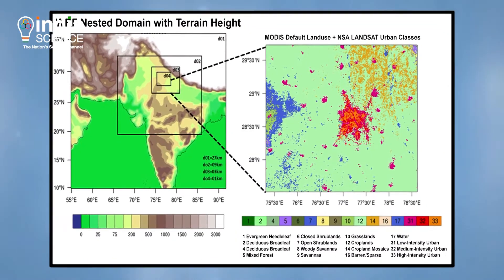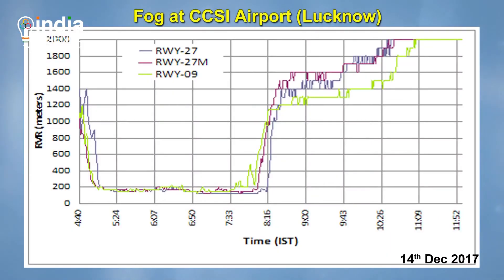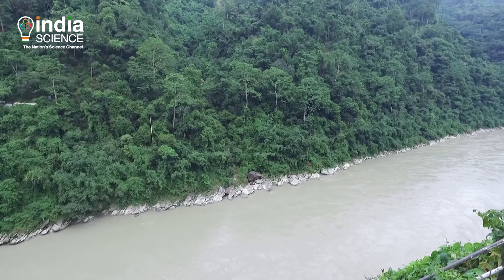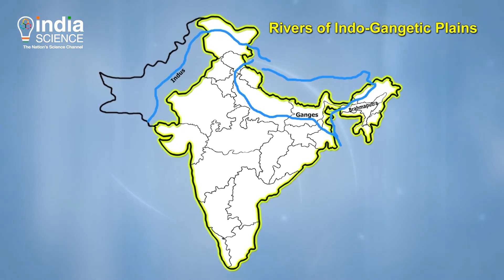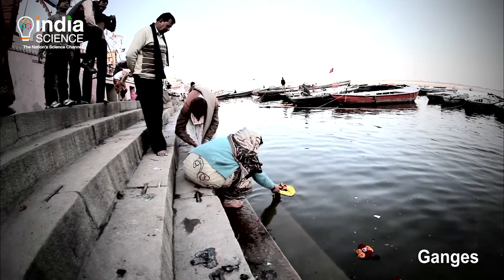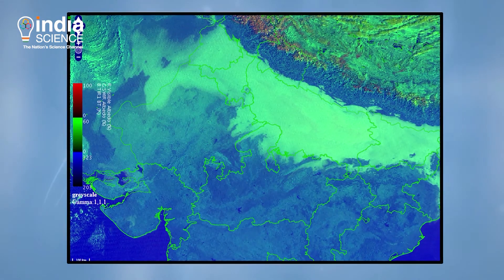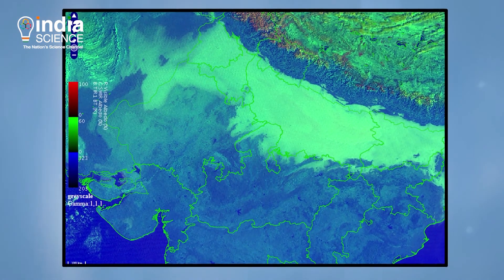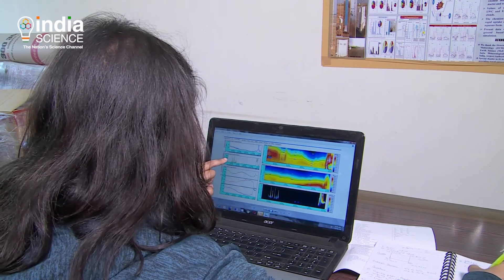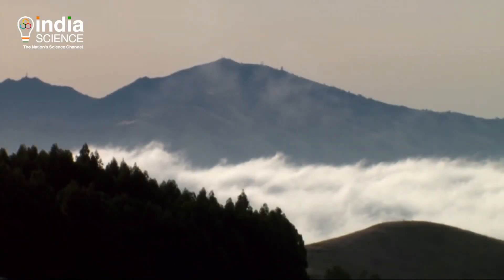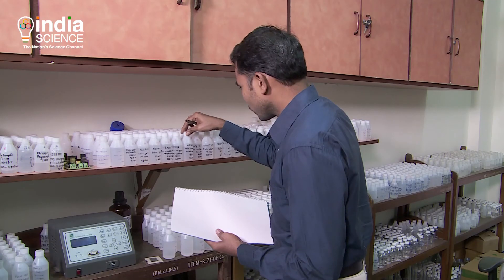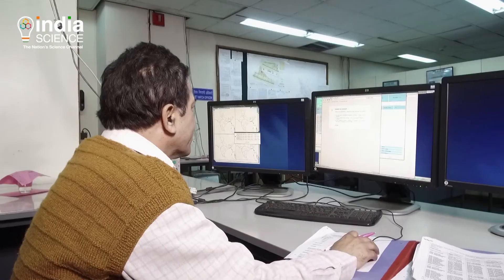Land use changes and increasing pollution in the region are mainly responsible for growing fog menace. A major part of north and northeast India is covered by three major rivers — the Indus, Brahmaputra, and Ganges — and the area often gets high moisture, helping fog to remain for longer periods. Hence, recently, fog prediction has taken center stage on the weather-related research agenda, with climate scientists collaborating to understand fog better and improve forecasting.